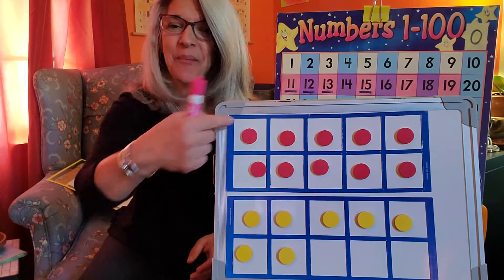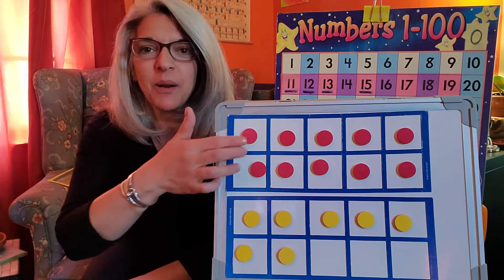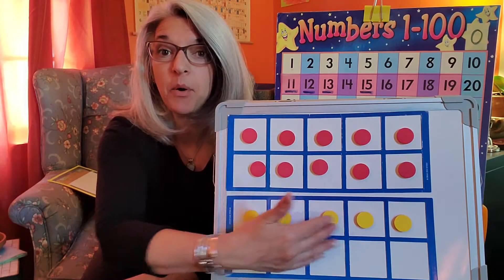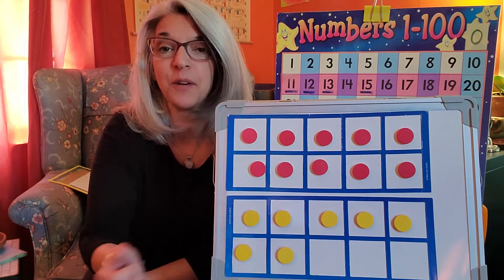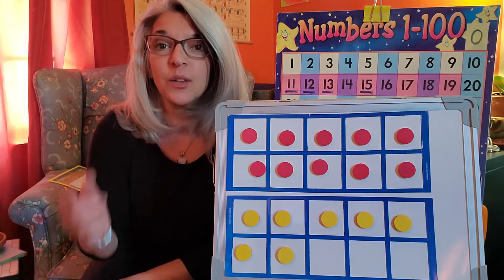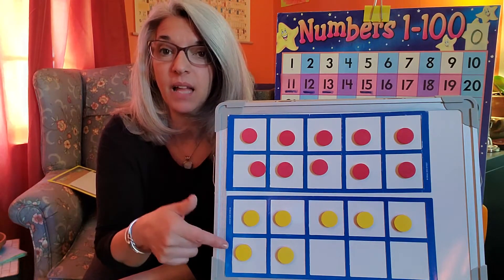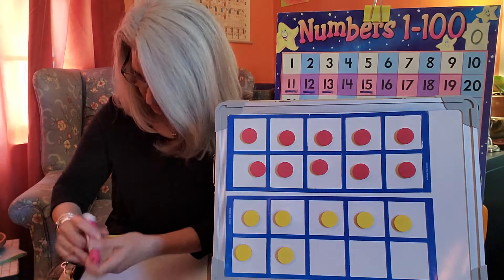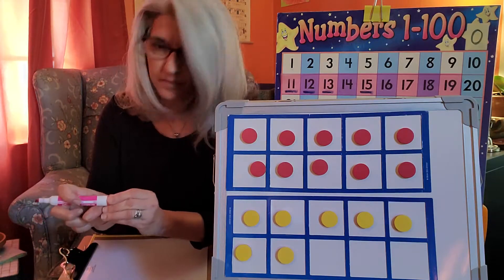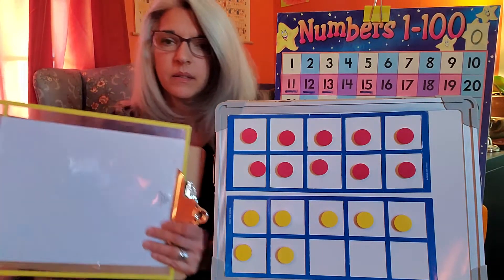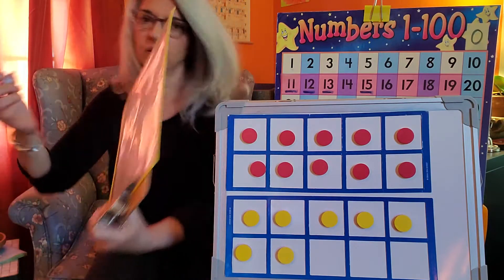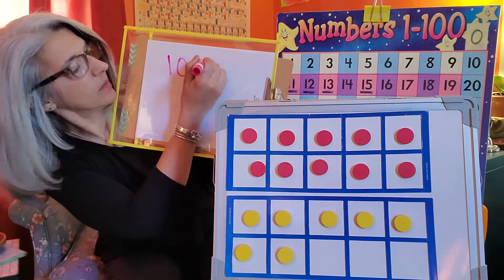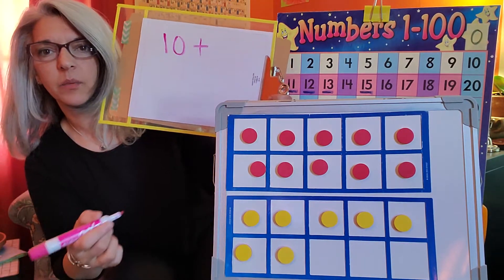Okay so we have here double ten frames. We talked about how two ten frames help us with teens because we have one complete ten and we can put our some more in the spaces of the second ten frame. For this one we have ten and some more. We're going to just quickly do a number sentence for that. So we know we have ten on top so I'm going to write ten plus and let's see what the some more is.